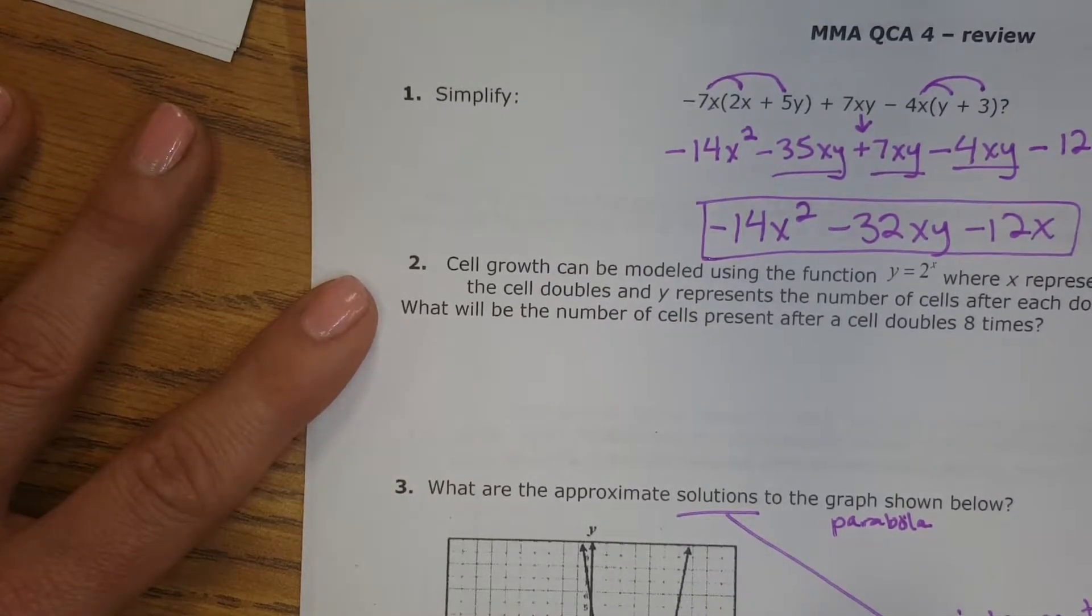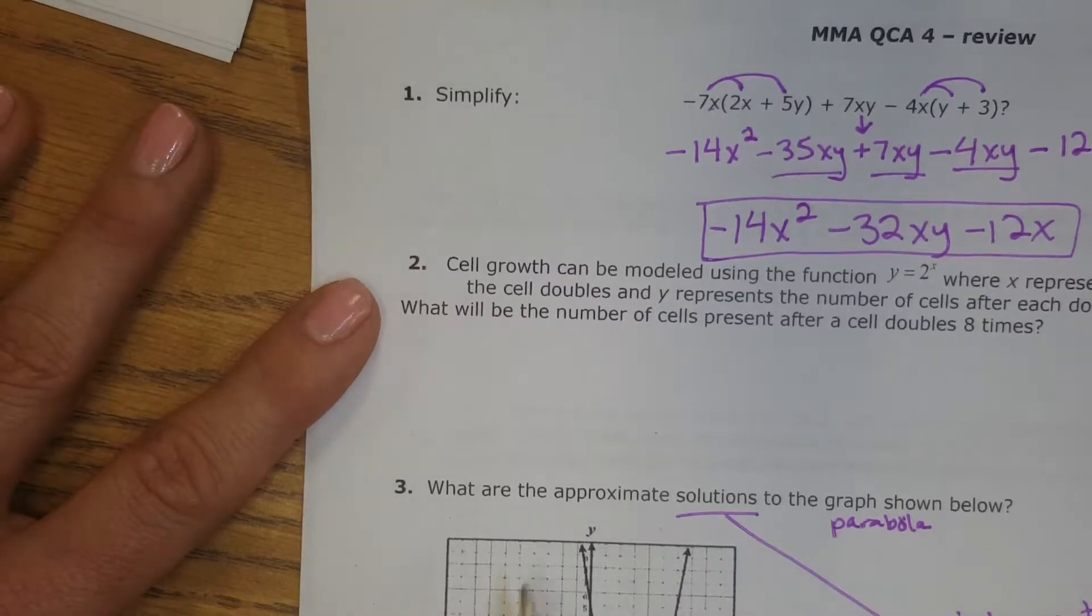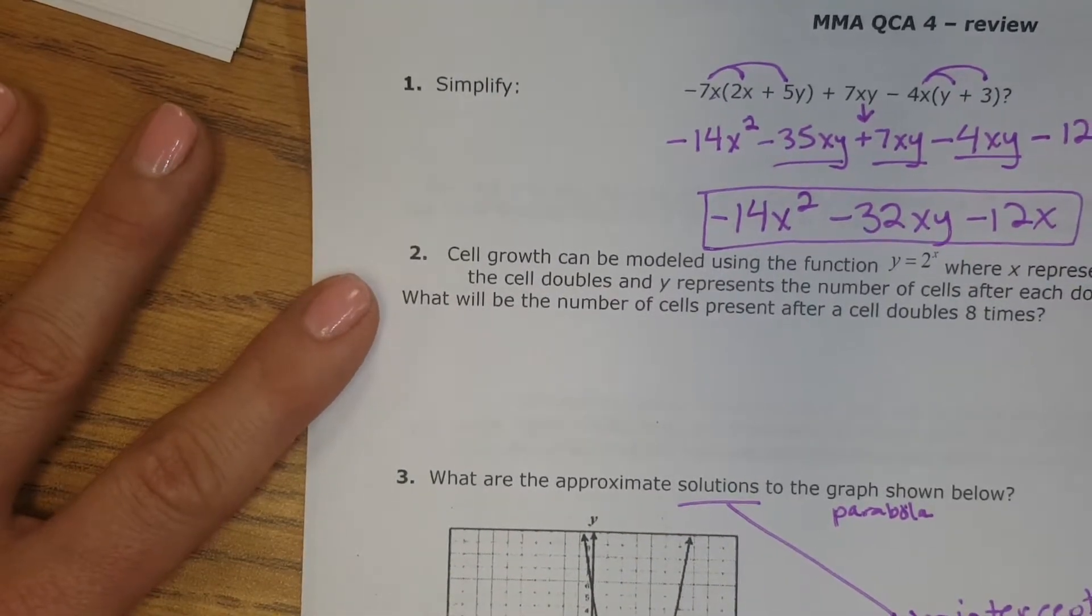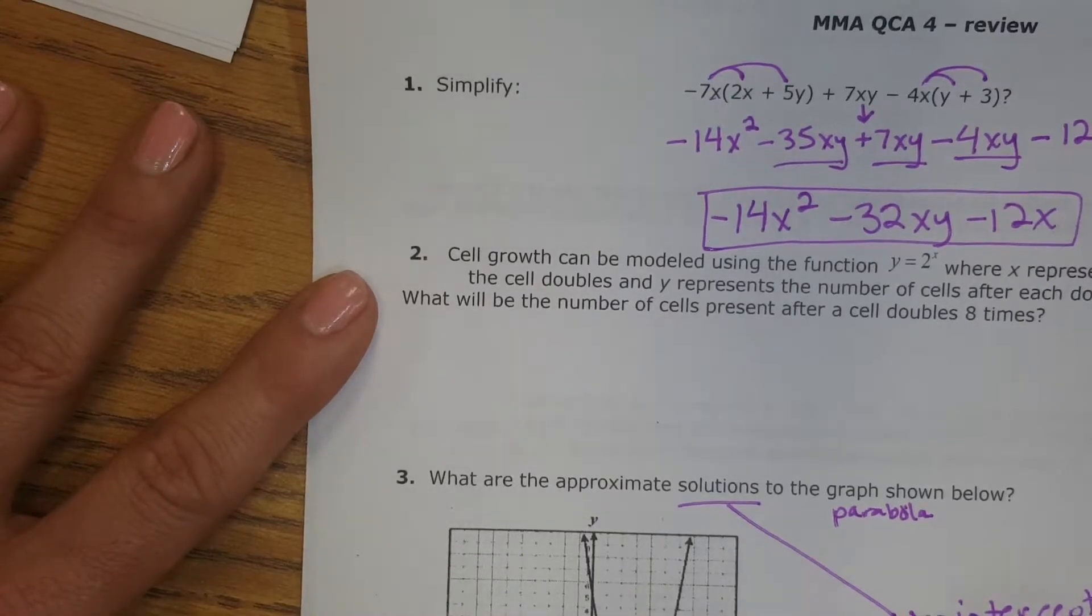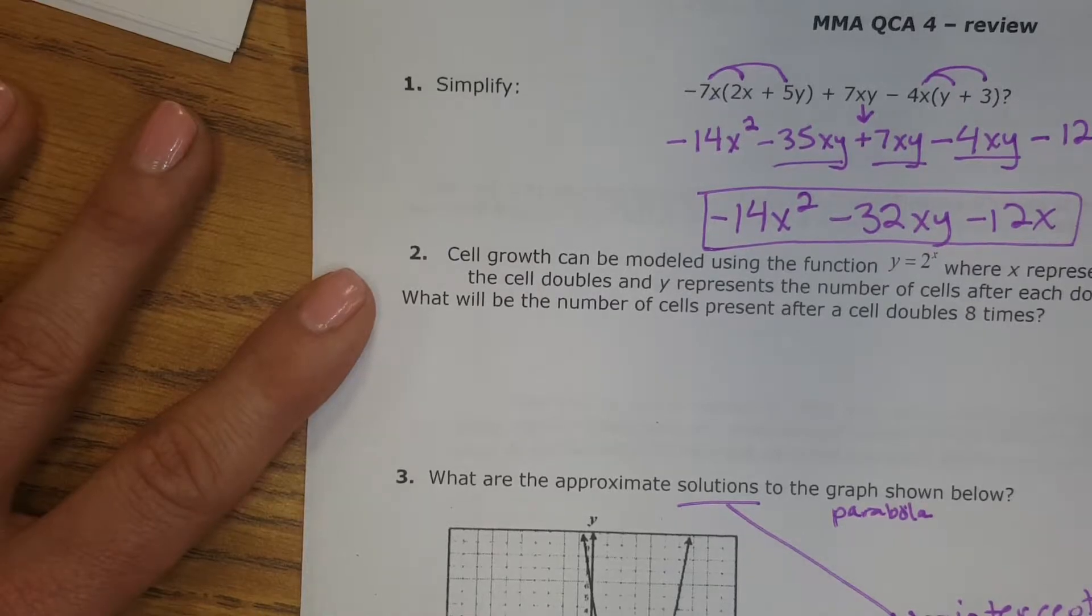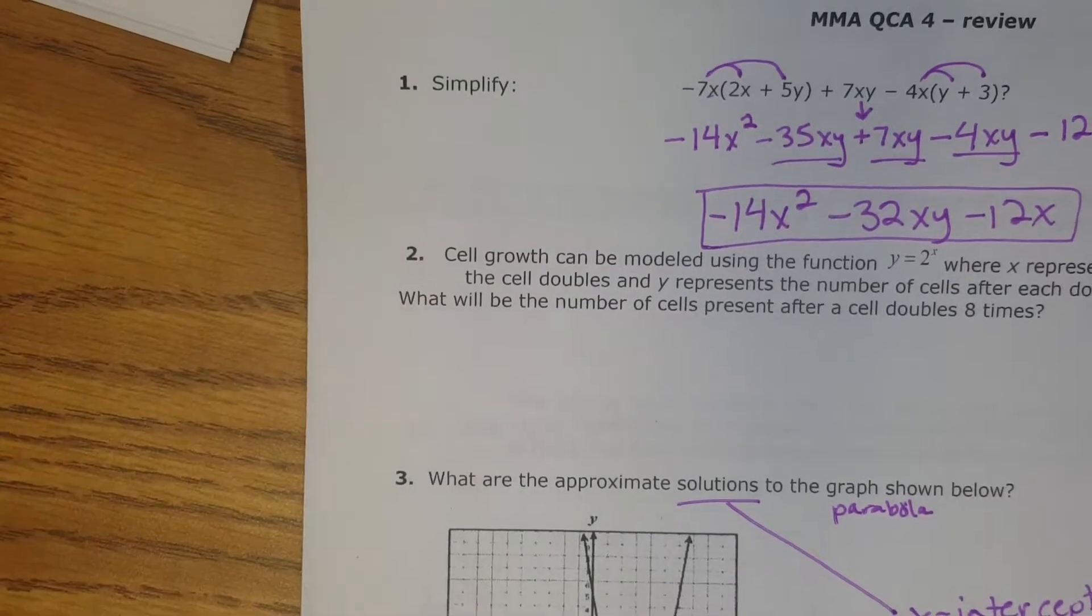And so they are here and here. And it says approximate, which means we don't need to do anything mathematical. We just look, and it looks like it's at about x equals 1, and about x equals 5. So those are my two roots, or my two solutions.